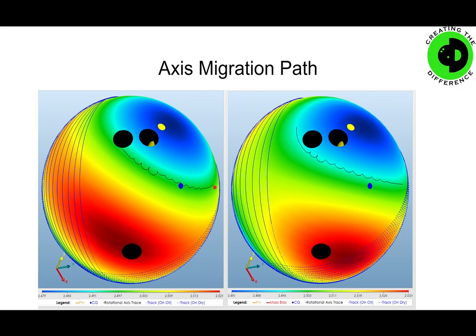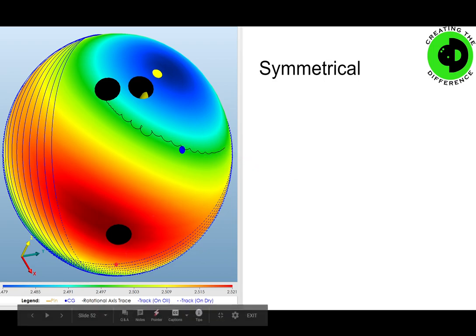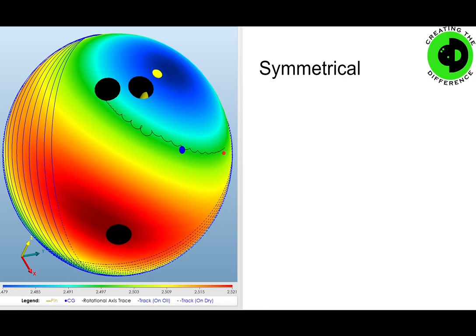So what does that really mean from a performance standpoint? These are the axis migration paths of those two bowling balls, and these shapes are not the same — it's that curvature and shape that matters when it comes to ball motion. For the symmetrical core shape, the ball is on about a 2.497 RG plane and primarily stays there all the way through the path to the pins. These circles indicate how it's consuming the energy. The more curvature you have, the more energy consumption, which means the earlier the hook is going to be. The symmetrical is fairly consistent, staying right around that 2.497 RG plane.